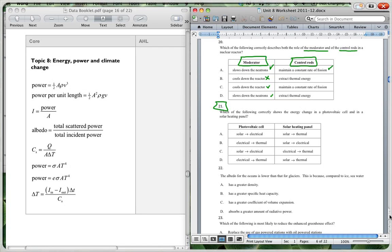Question 21. Which of the following correctly shows the energy change in a photovoltaic cell and in a solar heating panel? Now solar heating panel, we're just taking heat. So it's energy from the sun in the form of light energy, and it's just being changed into heat. So we're getting solar to thermal. In a solar heating panel, it would be solar to thermal. And in a photovoltaic cell, we're going from solar to electrical. So it's going to be A and A. So that is correct.